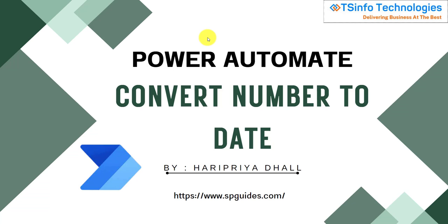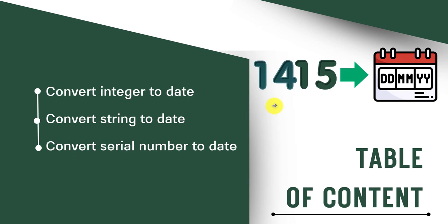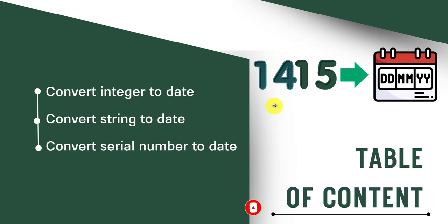Welcome to the usinfo technology channel. In this Power Automate tutorial we will see how we can convert a number to date using Power Automate. This tutorial will cover three examples: how to convert integer to date, how to convert a number coming as a string to date format, and how to convert a serial number to date — where the serial number is coming from an Excel sheet while fetching the date.